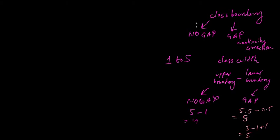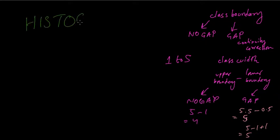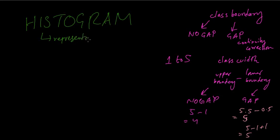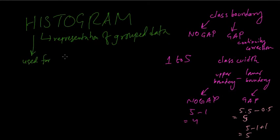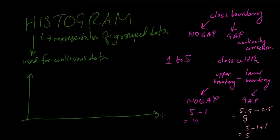In order to draw a histogram, you need to know the concept of class boundary, because a histogram is the representation of grouped data. On the x-axis, you have the class boundaries, labeled the same as the data — for example, time in minutes — because the class boundary is nothing but the data.